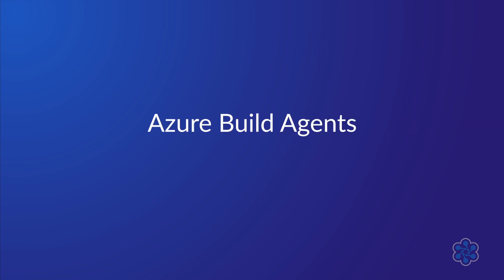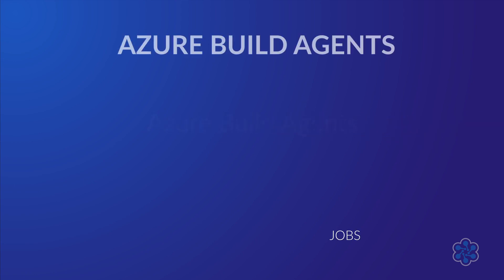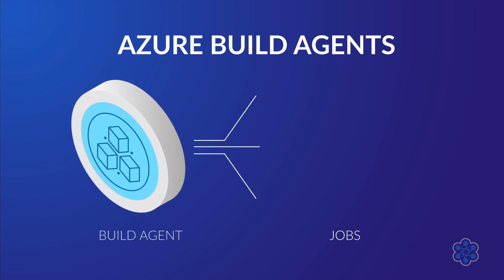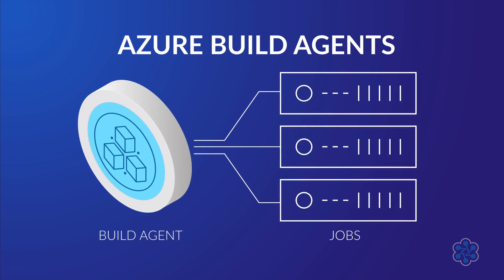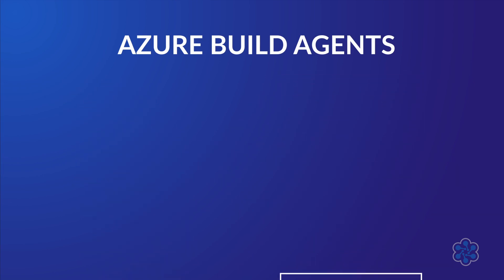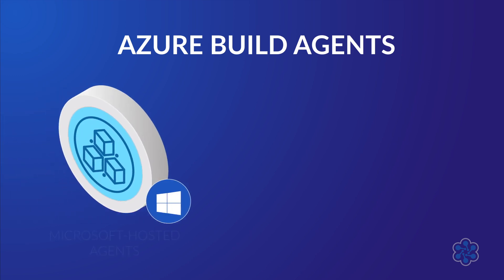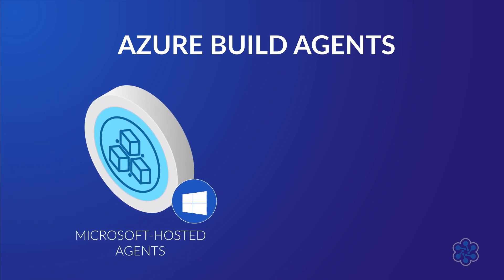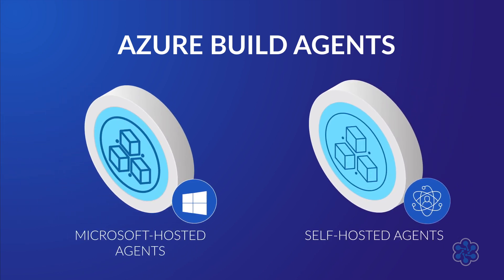In this lecture, we're going to talk about build agents. A build agent is a piece of software that runs a series of build tasks called a job on a machine. In Azure Pipelines, there are two types of build agents: a Microsoft hosted agent and self-hosted agents. We are going to go through a deeper explanation of build agents in this module.